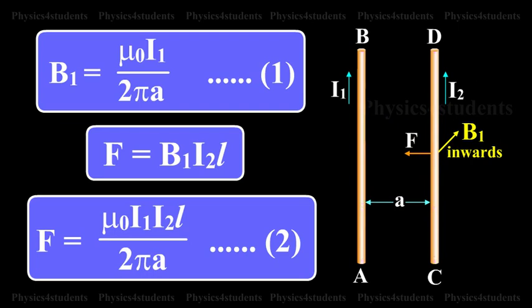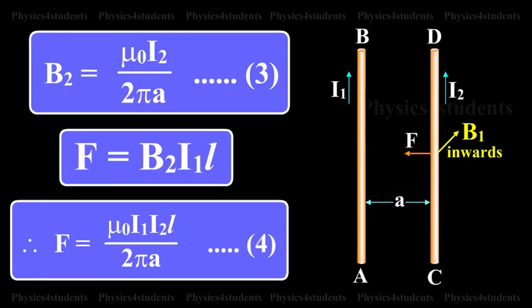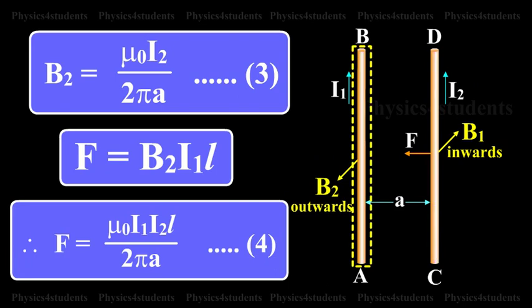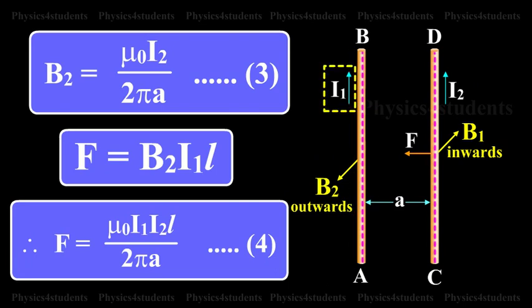The magnetic induction B2 due to current I2 in CD acts perpendicular to the plane of the paper and outwards. The conductor AB with current I1 is situated in this field.